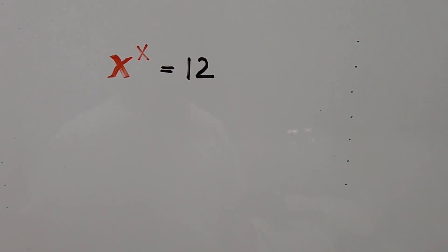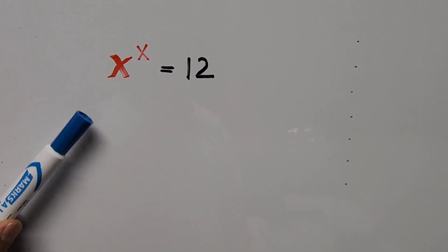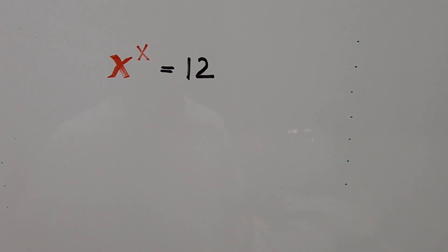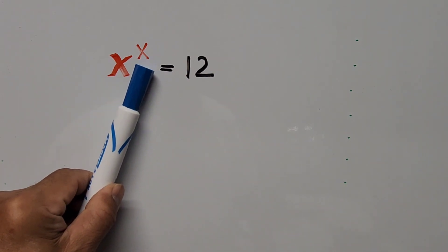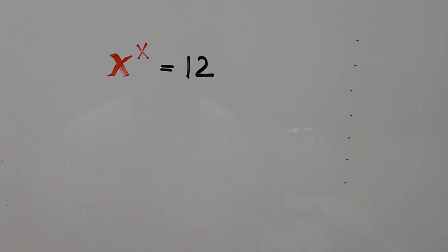Hello everyone, welcome to my channel. In this video we're going to solve the exponential equation x to the power of x equals 12, and we'll be looking for the real values of x. When we solve this kind of equation, if we focus our attention on the left hand side, the base is equal to the exponent — x to the power of x — and the right hand side is just the constant 12.